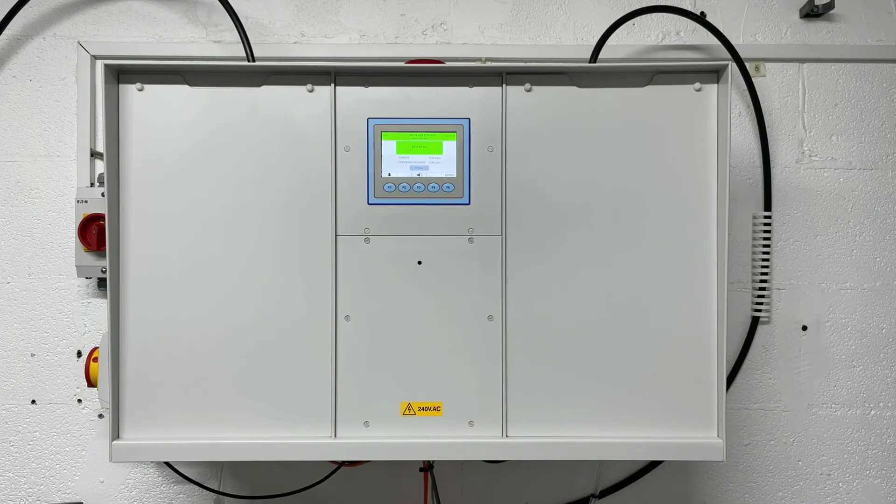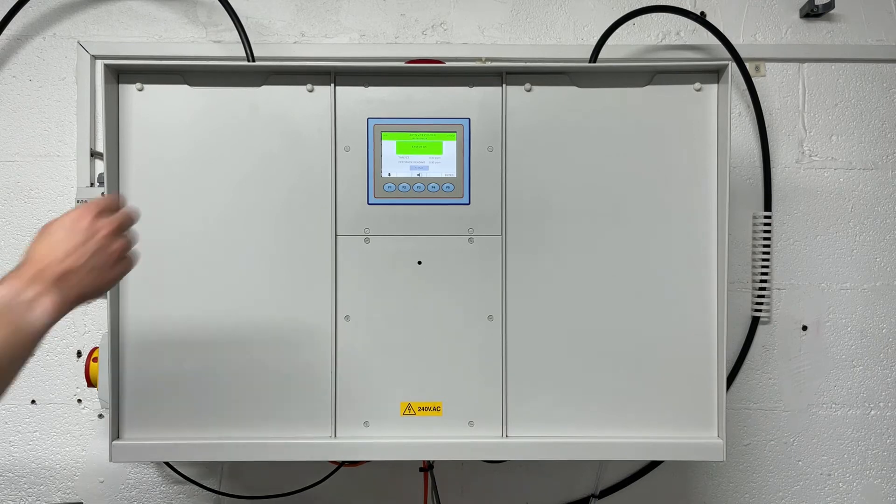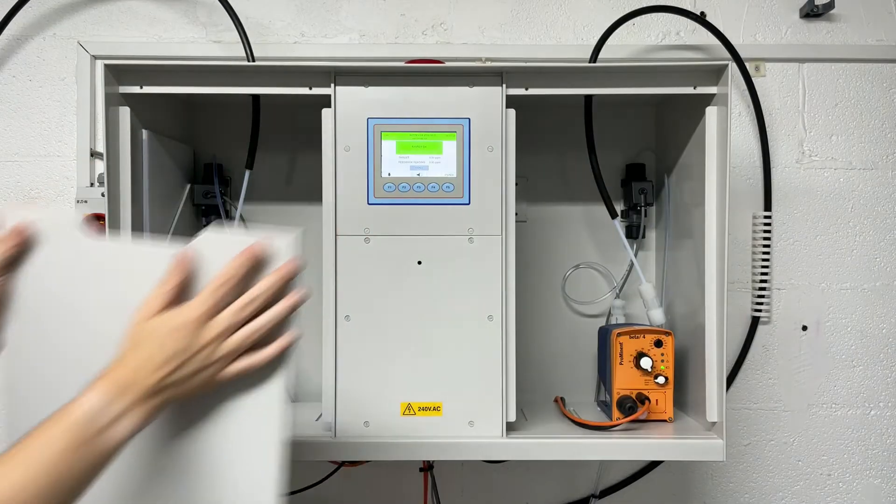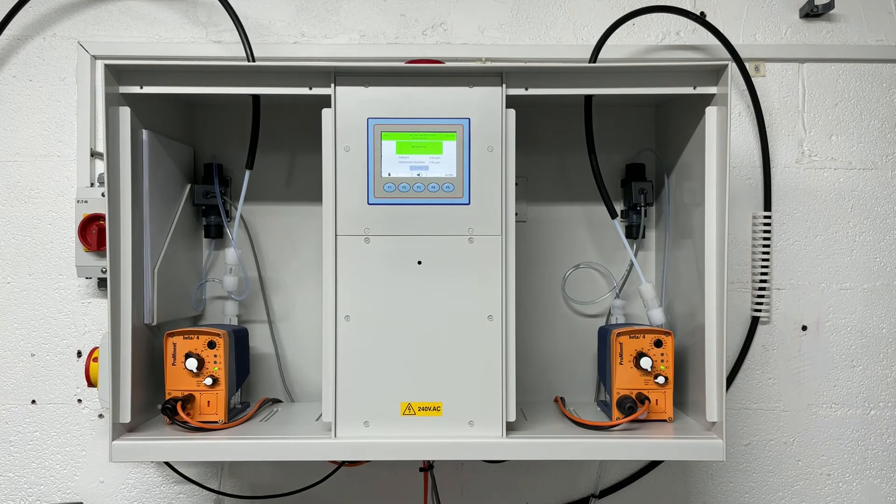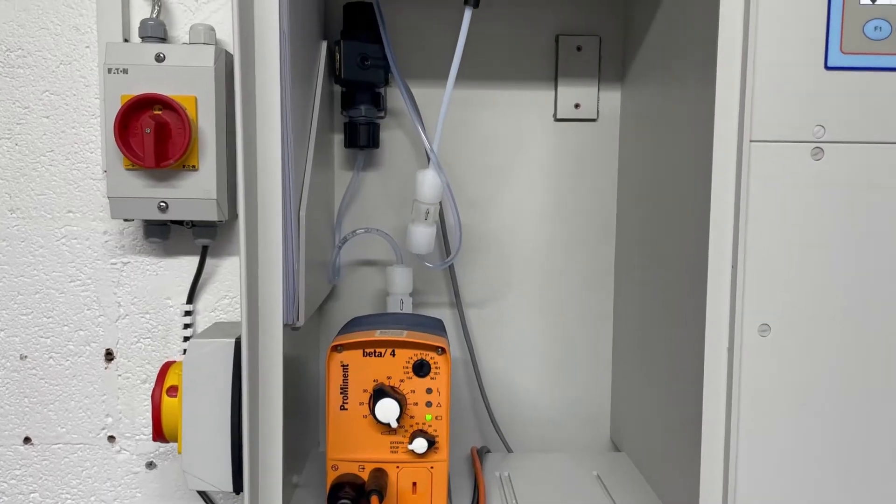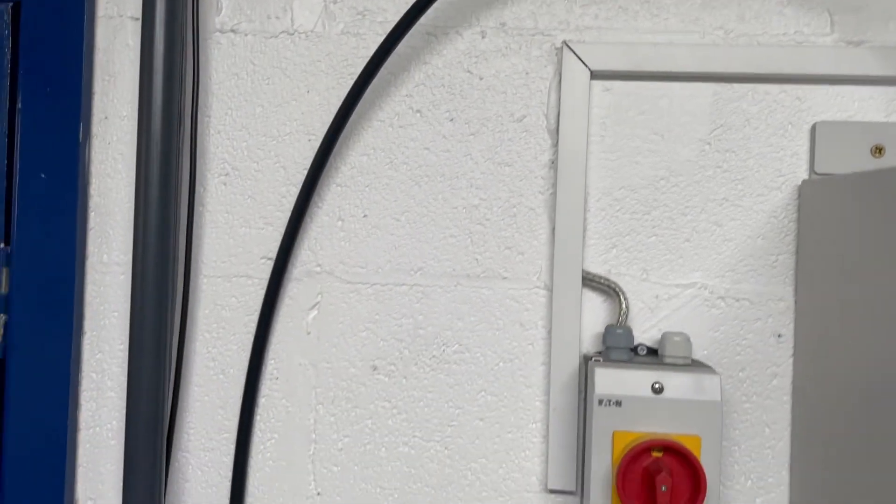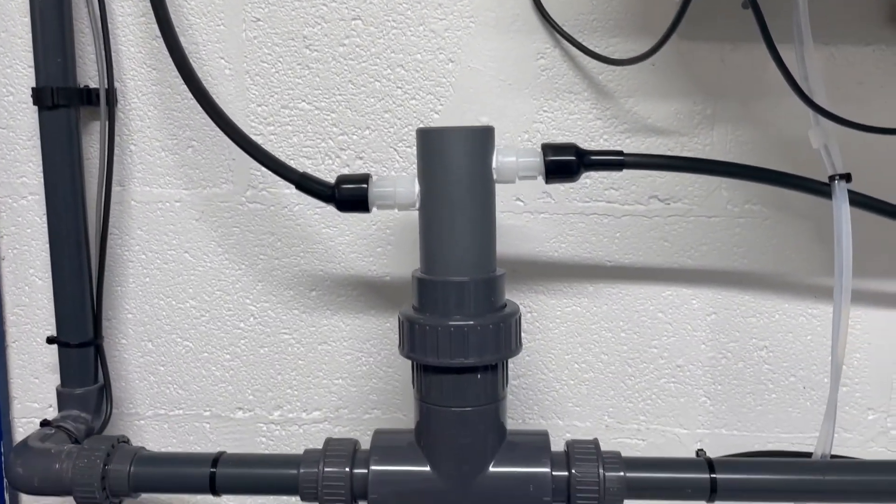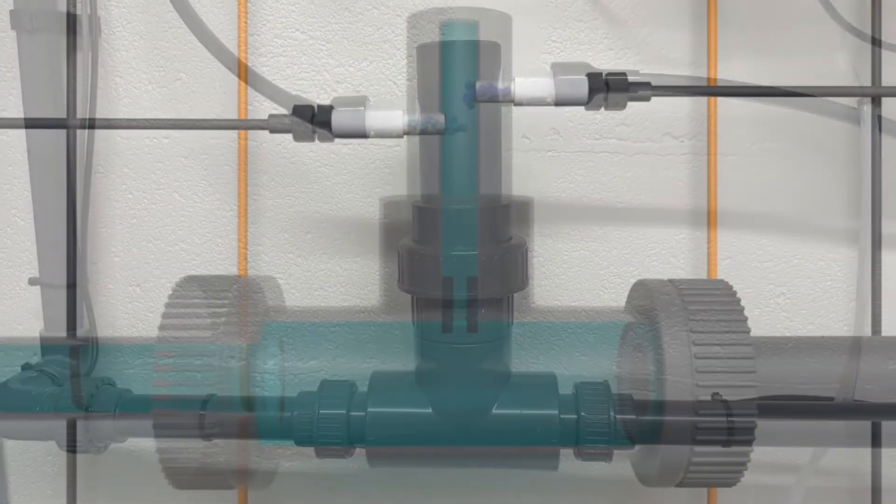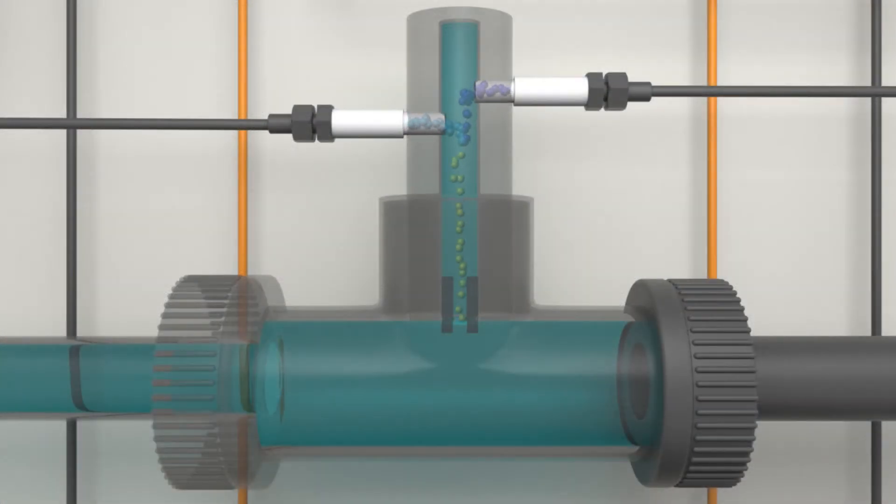The chemical dosing pumps are housed in two separate enclosures to ensure that there is no possibility of the chemicals mixing in the unlikely event of a leak. The chemical injection tubing is double-walled for additional security. The only place the two chemicals mix is in the specially designed reactor tee, which is installed directly in the water stream being treated.